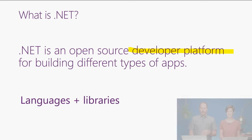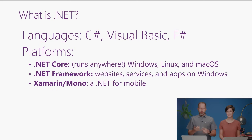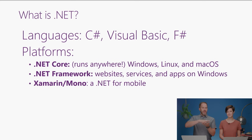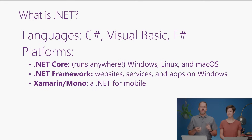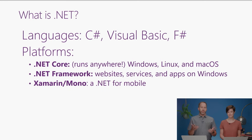Now with .NET, there are certain languages that you can use: C-Sharp, the one we've been teaching, also Visual Basic and F-Sharp. Then the platforms are the things that you stand on, the things that you write your software for. There's .NET Core, which is open source and runs anywhere like Windows, Linux, and Mac. The .NET Framework, which is very popular and has been around for a very long time, has let you write websites and services and apps on Windows for many, many years.